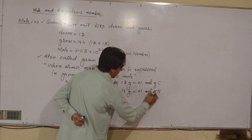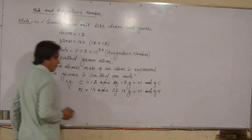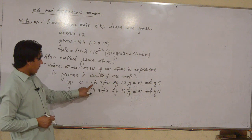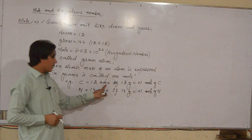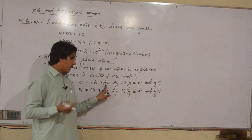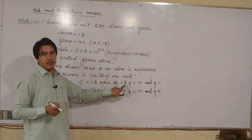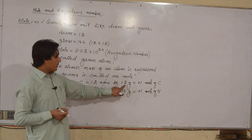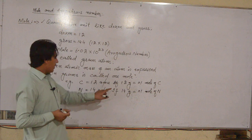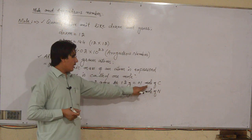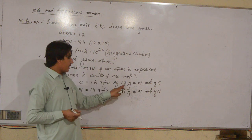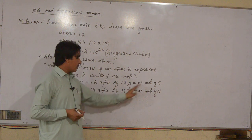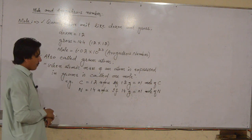So by definition, when the relative atomic mass of an atom is expressed in grams, it is called a gram atom. That is why the mole is also called gram atom — when the atomic mass of an atom is represented in grams.